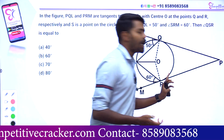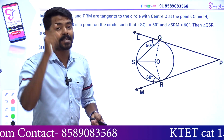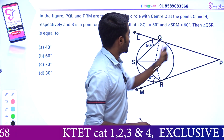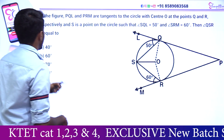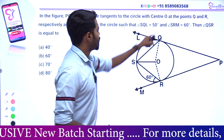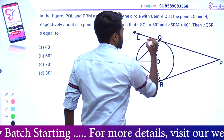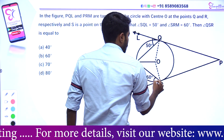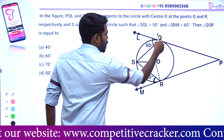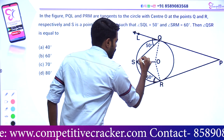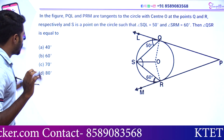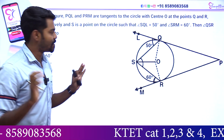PQL and PRM are the same. The center is O. S is the point of the circle such that angle SQL is equal to 50 degrees — this is 50. SRM is 60. QSR is equal to QSR — this angle is complete. Simple, we have options: 60, 80. Let's see how we can answer it.